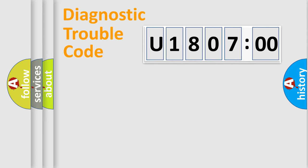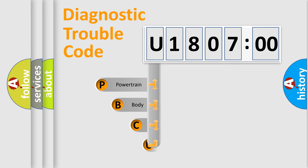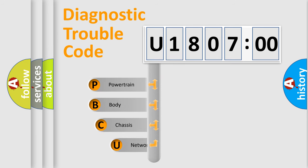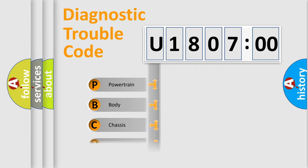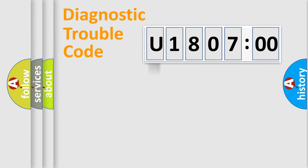Let's do this. First, let's look at the history of diagnostic fault code composition according to the OBD2 protocol, which is unified for all automakers since 2000. We divide the electric system of the automobile into four basic units: Powertrain, Body, Chassis, and Network.